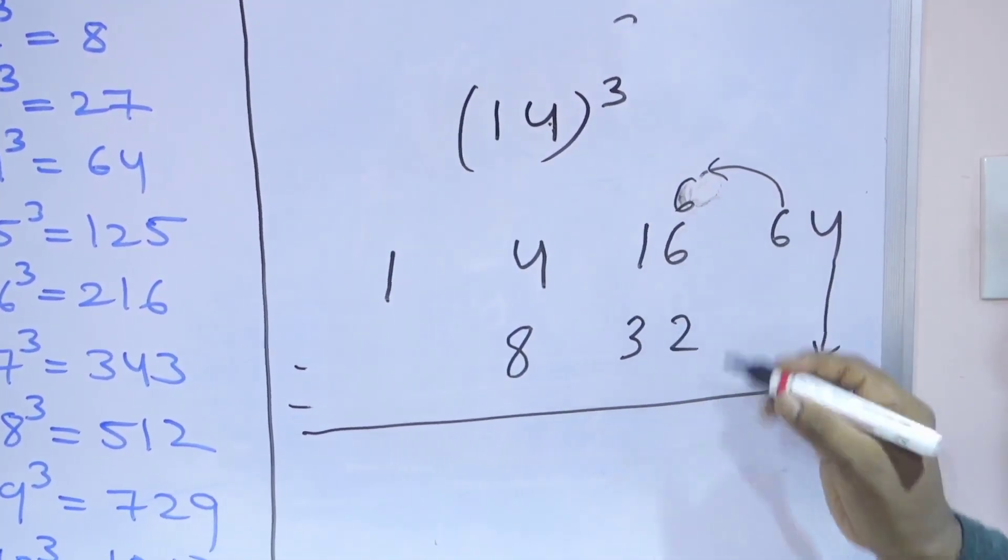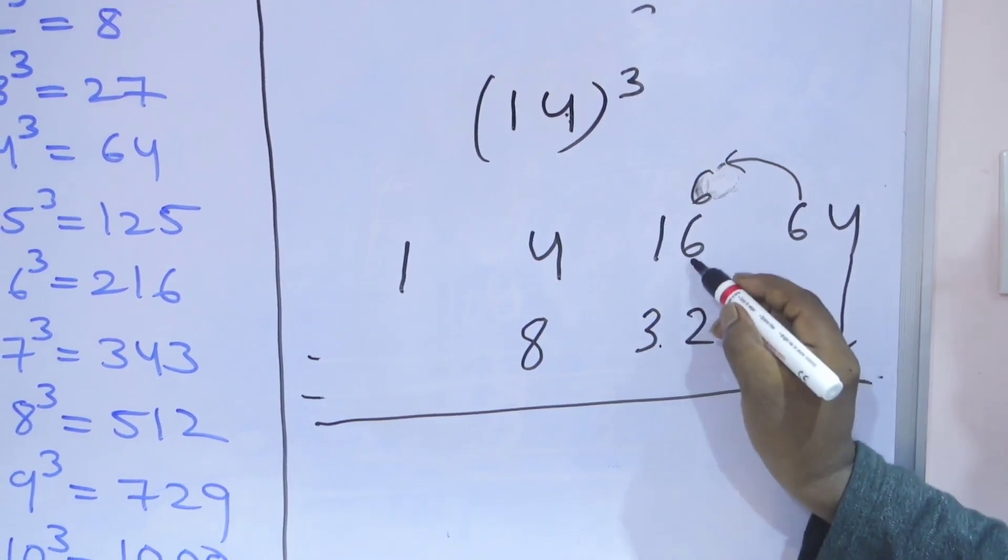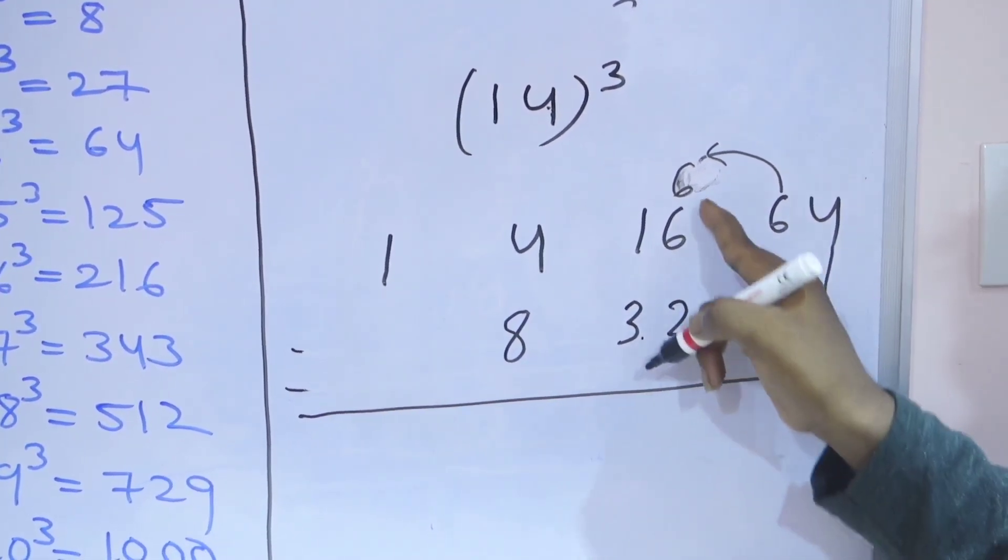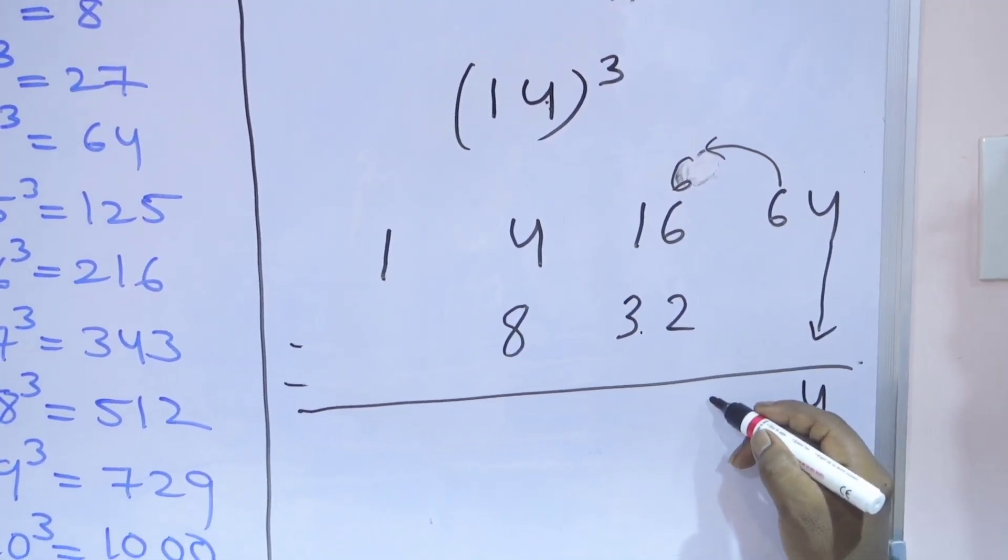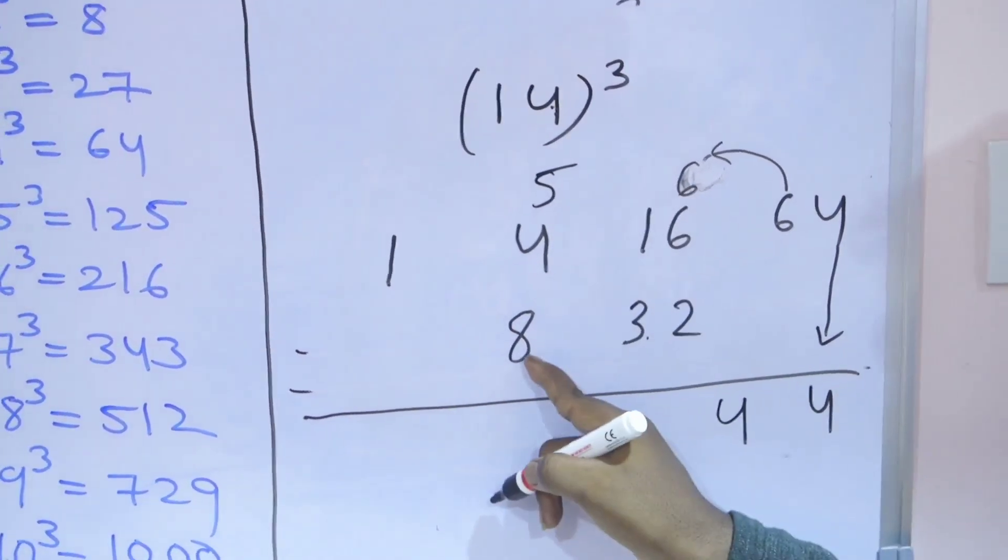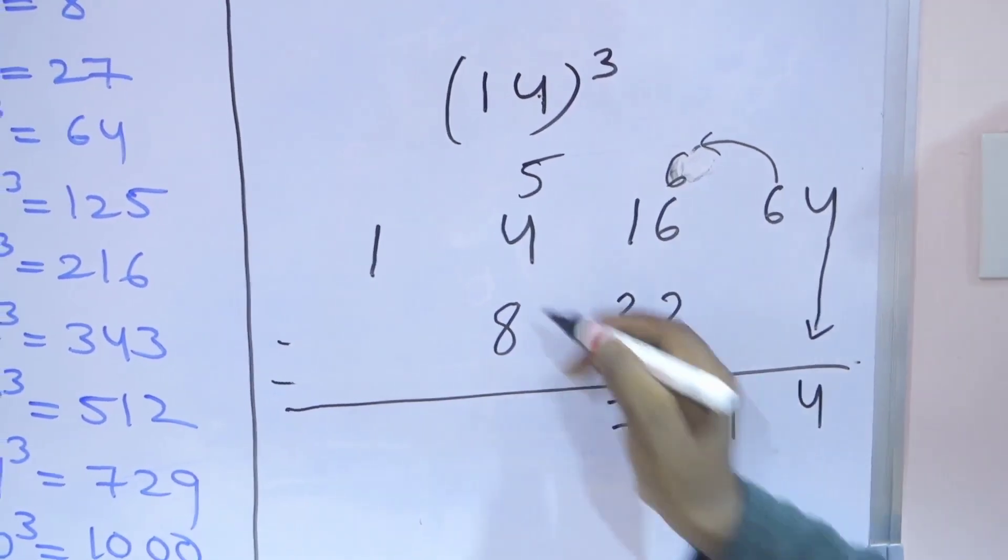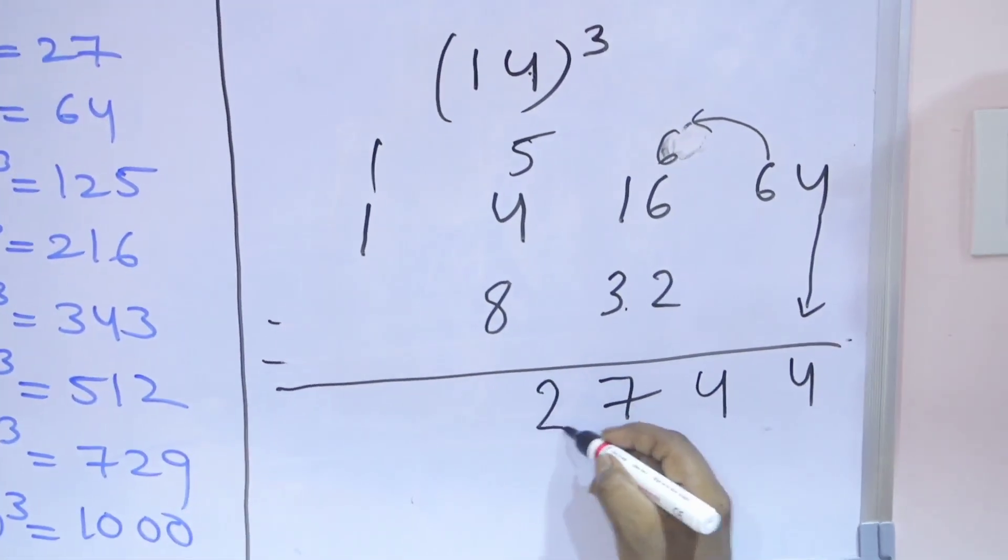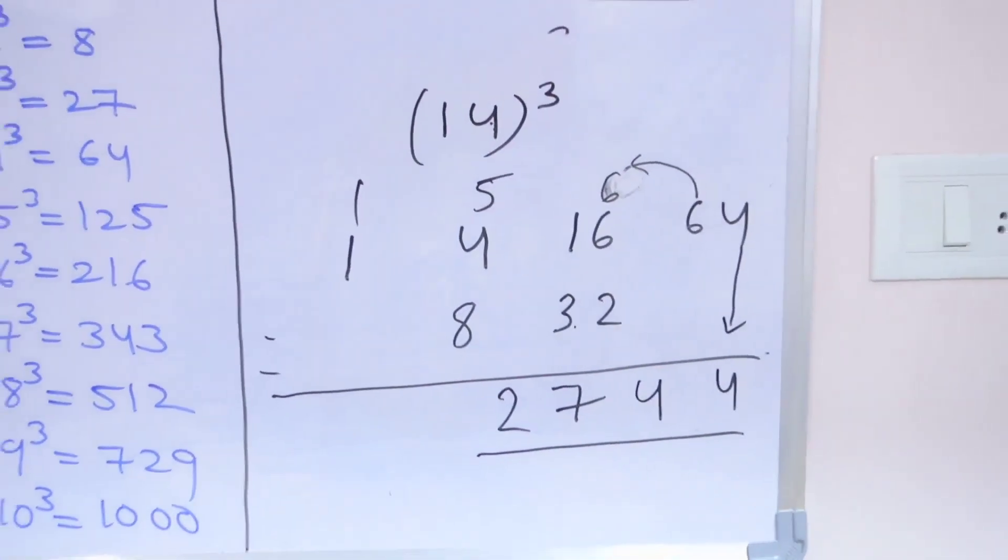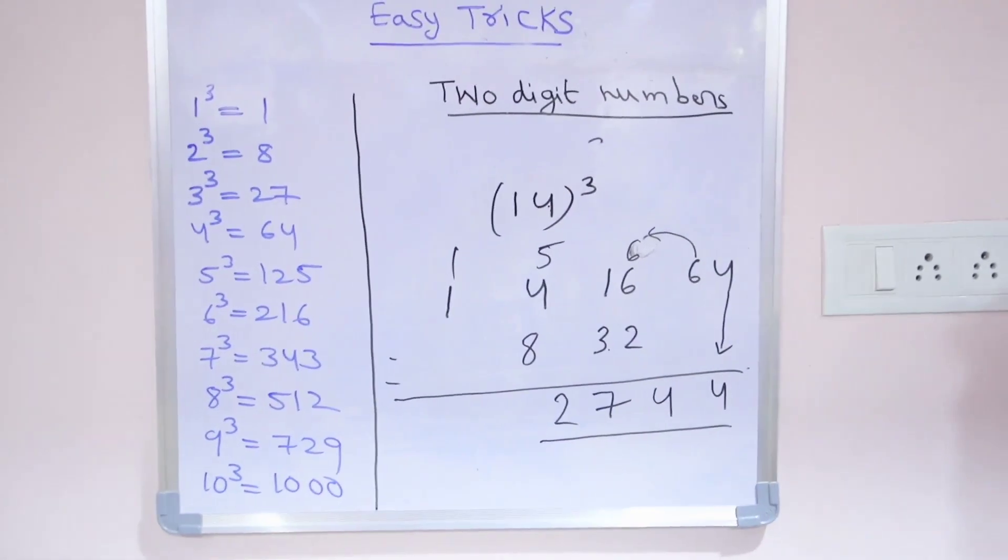Write the last number only, 4. This number is added here, so 6 here. 32 plus 16 is 48, 48 plus 6 is 54. So 4 and 5. 8 plus 4 is 12, 12 plus 5 is 17, which means 7 and 1. And 1 plus 1 is 2. So 2744 is the answer.